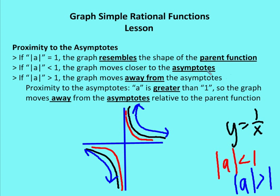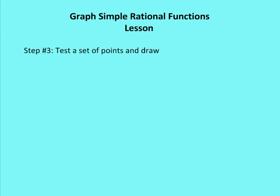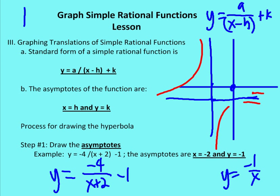Now we figure out the proximity to the asymptotes relative to the parent function y is equal to 1 over x. If the absolute value of a equals 1, the graph has the same shape as the parent function. If the absolute value of a is less than 1, the graph moves closer to the asymptotes. If the absolute value of a is greater than 1, the graph moves a little bit away from the asymptotes. In my example, a is 8, so the absolute value of 8 is greater than 1, and the graph moves away from the asymptotes relative to the parent function. Then we test a set of points and draw the hyperbola.